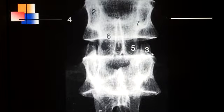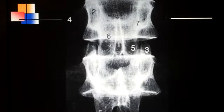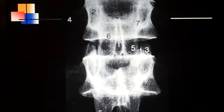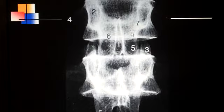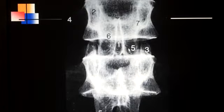Number three is the superior articular process — it goes up and comes down right there. You can see the joint space at the point of the arrow, called the apophyseal joint. Number five is the inferior articular process of this segment, coming all the way down, and all of that is the inferior articular process.